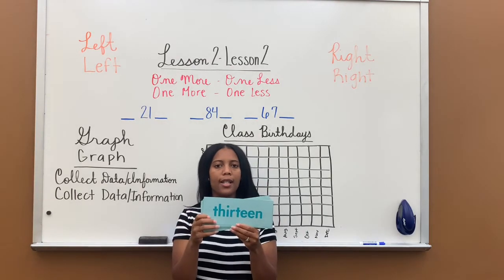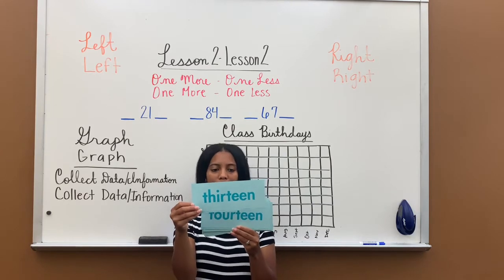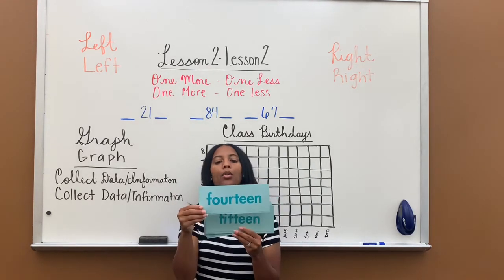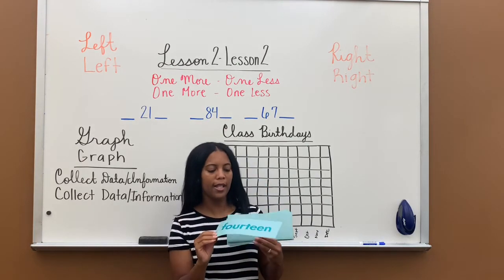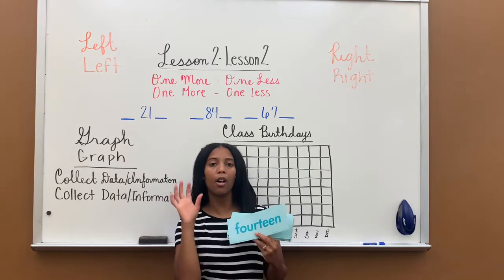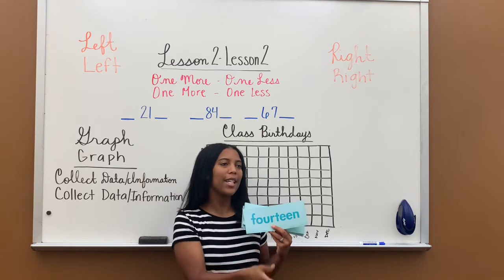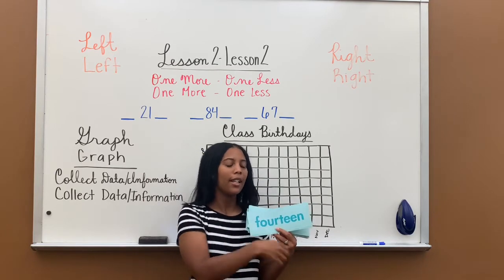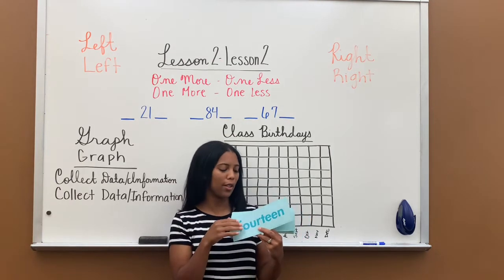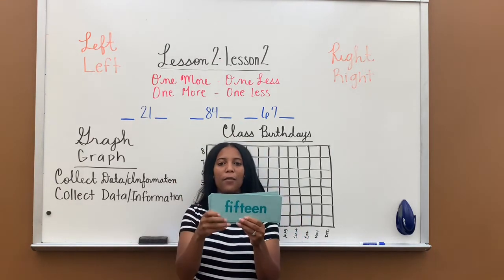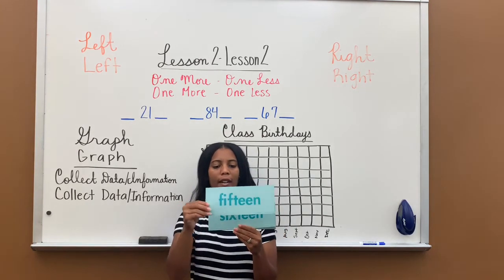Thirteen — T-H-I-R-T-E-E-N, thirteen. Fourteen — F-O-U-R-T-E-E-N. And this one is pretty easy because it's how to spell four and then teen. All from 13 to 19 end with T-E-E-N. So if you remember that teen is T-E-E-N and you remember how to spell the first part of the number, these are easy. Fifteen — F-I-F-T-E-E-N, fifteen.